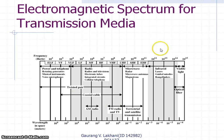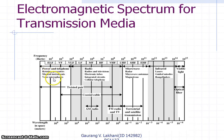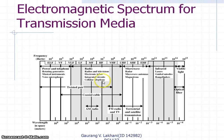The electromagnetic spectrum for transmission media includes various kinds of frequencies such as very low frequency and very high frequency. Certain frequency ranges are used for power and telephone, others for different instruments. Radio, television, electronic tubes, integrated circuits, and cellular telephony all use specific frequency ranges within this spectrum.